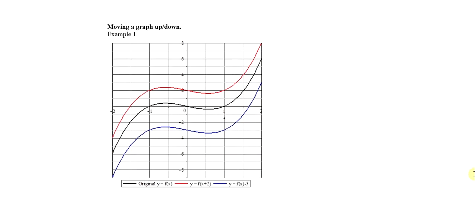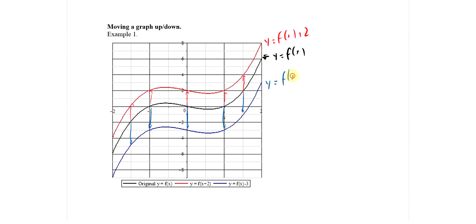Example 1 — moving the graph up and down. Here's our original graph in black. The red graph has been moved up 2 units — every y value went from 0 up to 2. When we were at x = -1.5, y was -2 and now it's 0; at x = 1.5, y was 2 and now it's 4. So the red graph is f(x) + 2. The blue graph has been moved down 3 units each place, so that is y equals f(x) - 3.